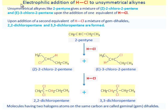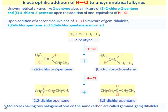Electrophilic addition of HCl to unsymmetrical alkynes. Unsymmetrical alkynes like 2-pentyne give a mixture of Z-2-chloro-2-pentene and E-3-chloro-2-pentene upon the addition of one equivalent of HCl. Upon the addition of a second equivalent of HCl, a mixture of gem dihalides, 2,2-dichloropentane and 3,3-dichloropentane, are formed. Molecules having two halogen atoms on the same carbon are called geminal dihalides or gem dihalides.